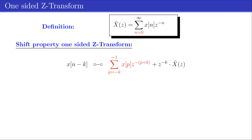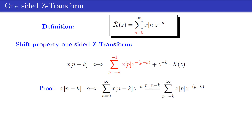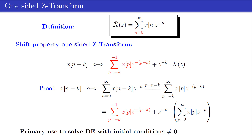Specifically, if x[n] has a one-sided z-transform X̃(z), the one-sided z-transform of the shifted sequence x[n - k] differs from the two-sided case by additional initial-condition terms. The proof applies the one-sided z-transform to x[n - k] and substitutes a new variable p = n - k, which finalizes the proof.